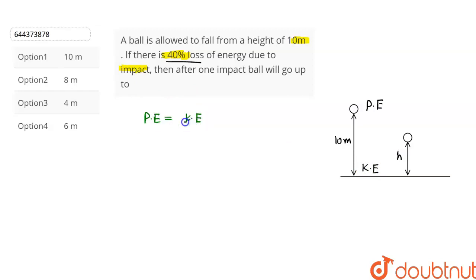From here we can write: potential energy will be equal to mass of the ball into acceleration due to gravity into height, which is equal to kinetic energy. At height 10 meters, the kinetic energy is equal to 10mg. Let this be the first equation.